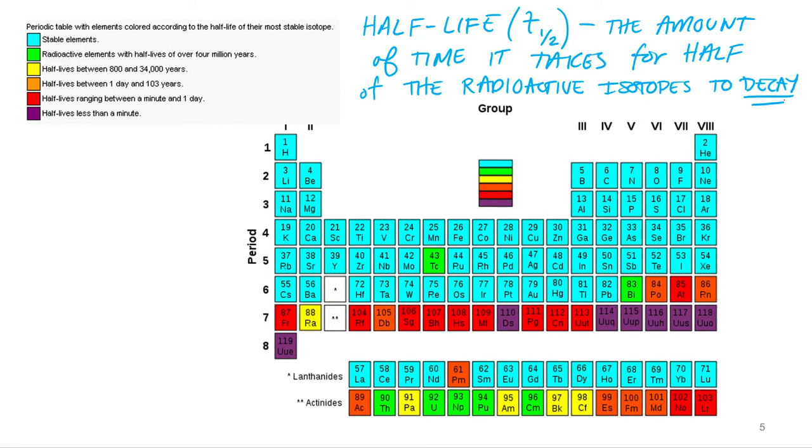Radioactive isotopes have a wide range of half-lives. The ones in this, I don't know where I got this image. The ones in purple have half-lives less than a minute, some down to like milliseconds. Whereas radioactive isotopes like uranium, uranium or thoriums,